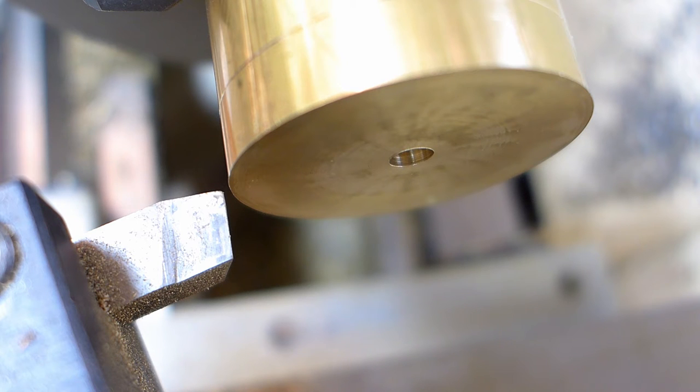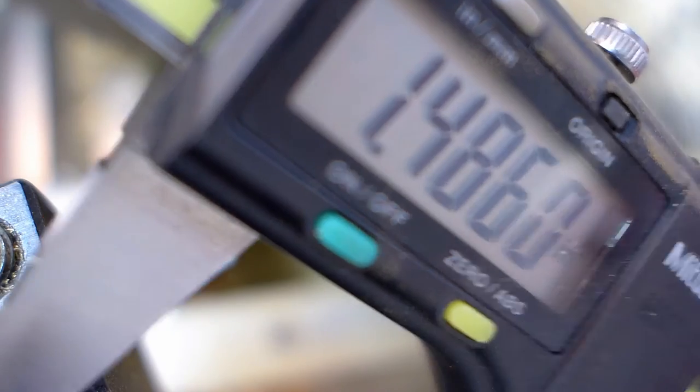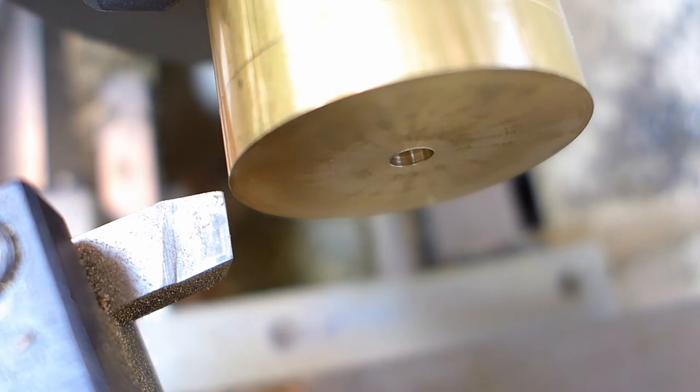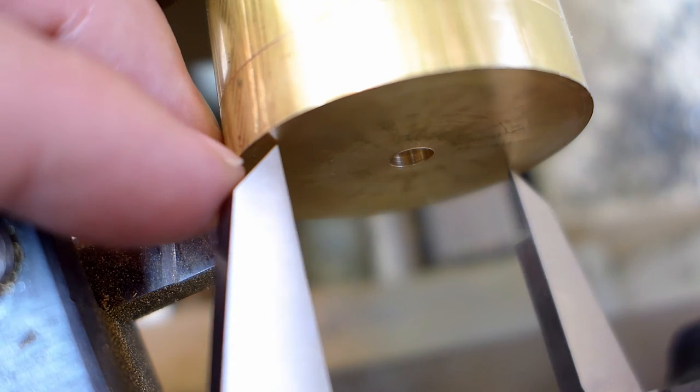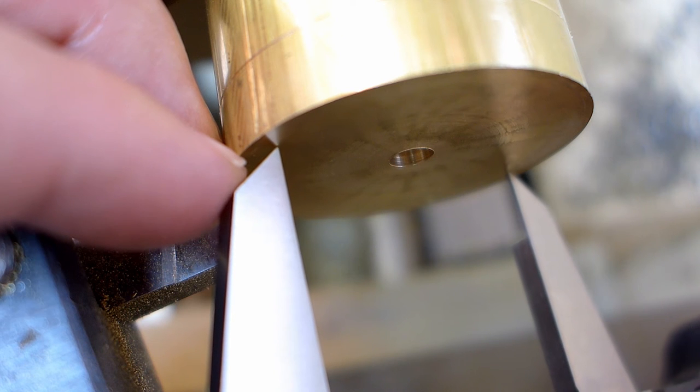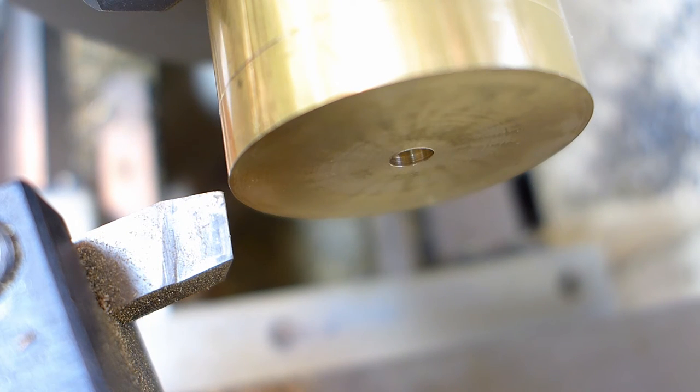And I want to cut it to the diameter of 1.361 plus an eighth of an inch, 1.486. So I'm going to readjust this to 1.486. So there's 1.486. Yeah, so that's about an eighth of an inch off of each side. Right, okay, that makes sense, right? That's my first pass.